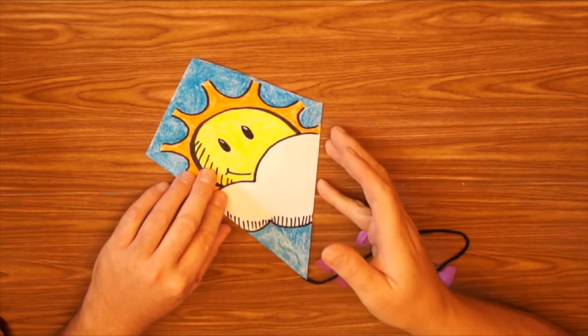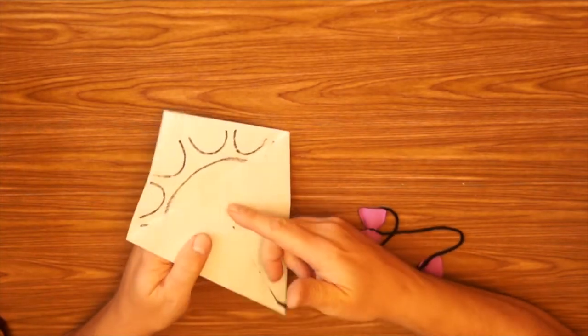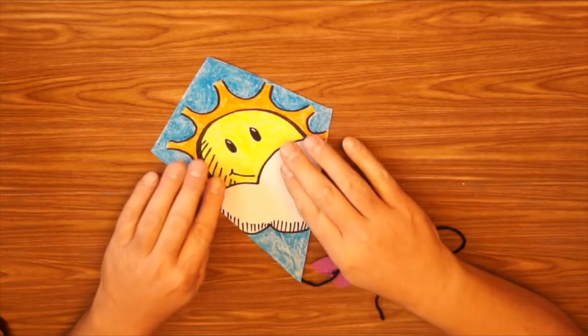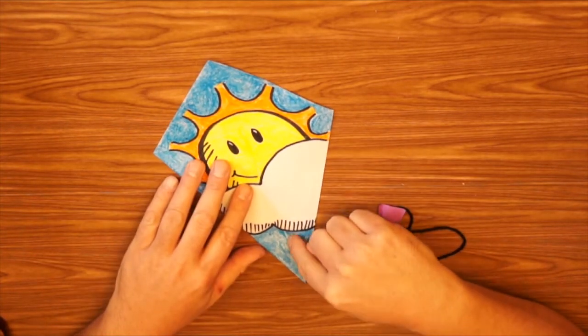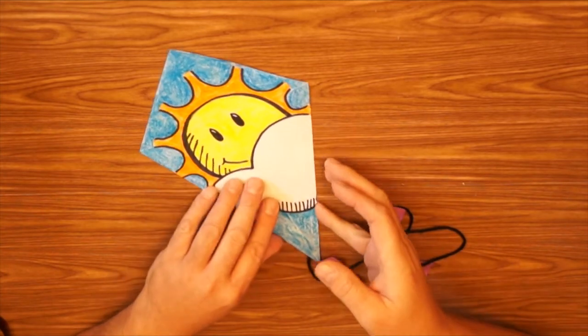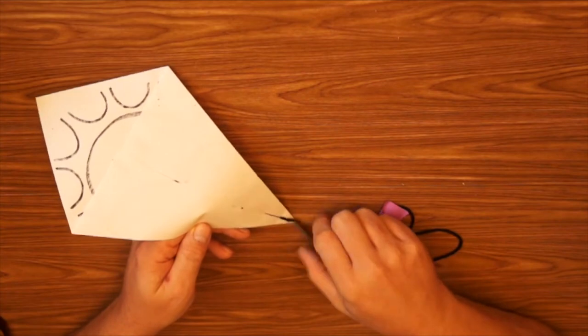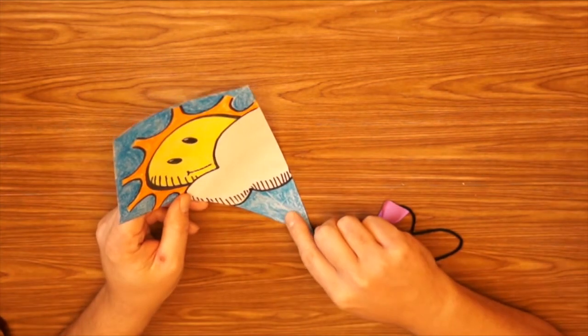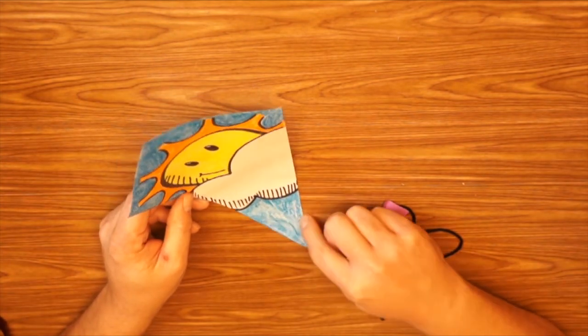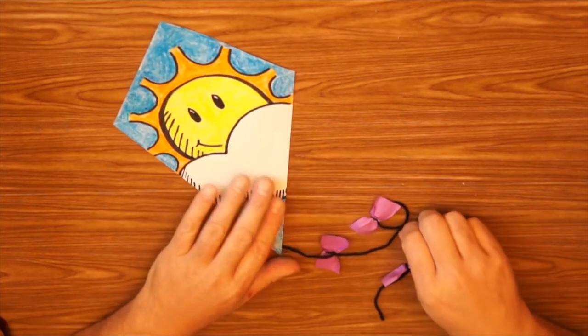Now if you do this option, you might want to unfold it enough to color so that you don't get this line down the center. Or also uncolor it before you put the tail on, so that way you don't have the tail underneath when you're trying to color. So that's another tip there.